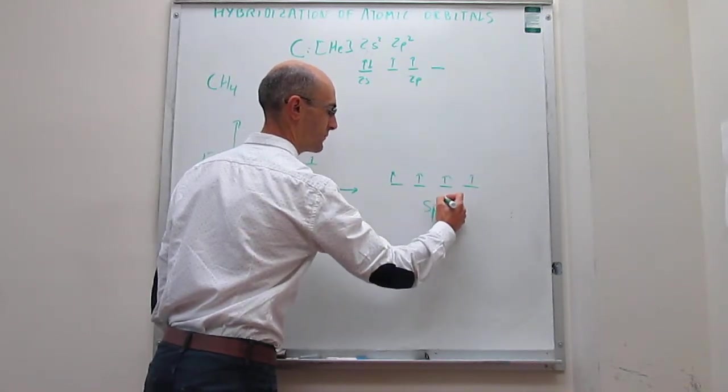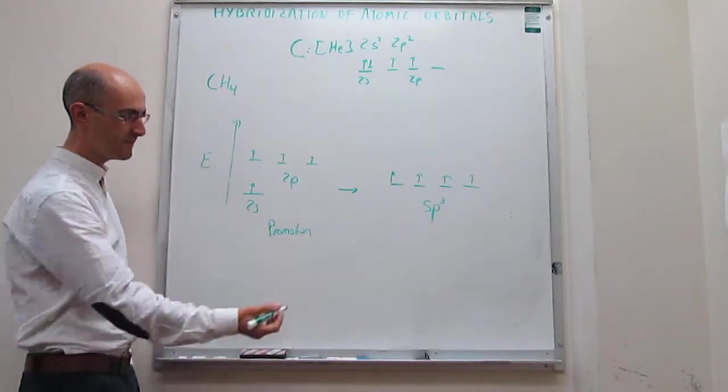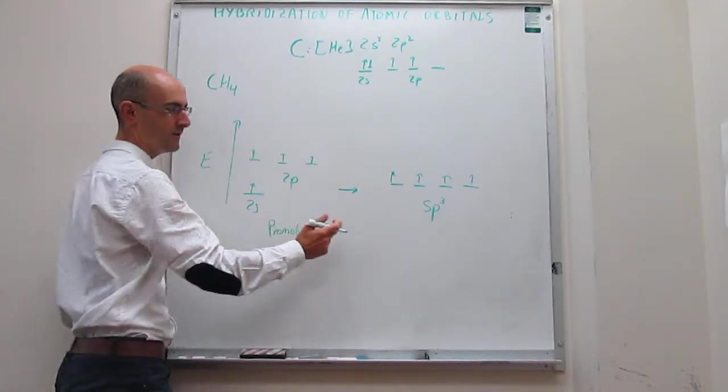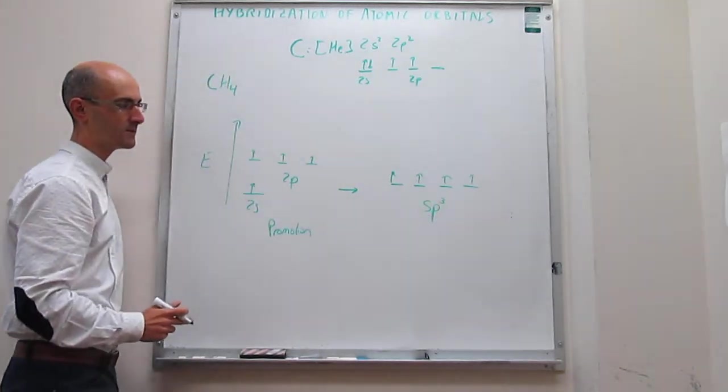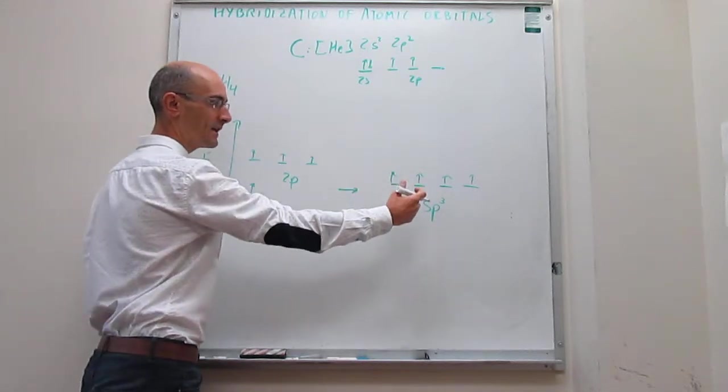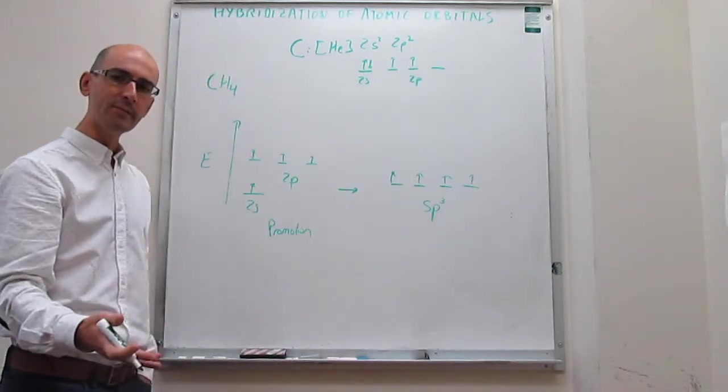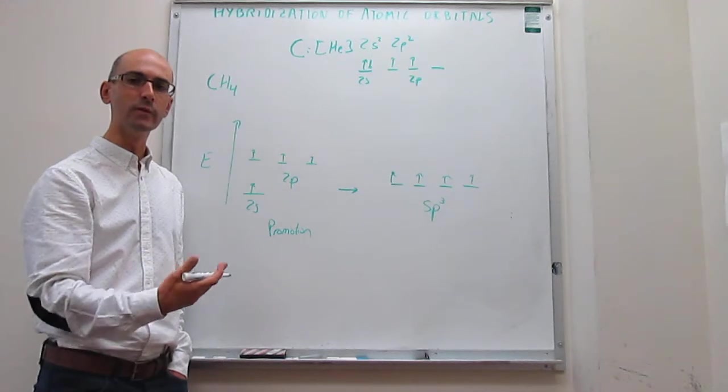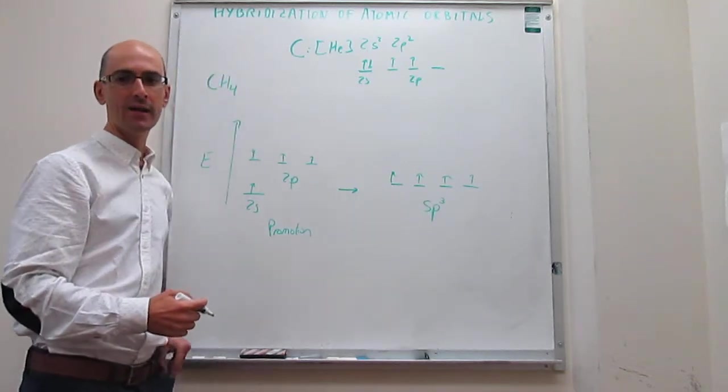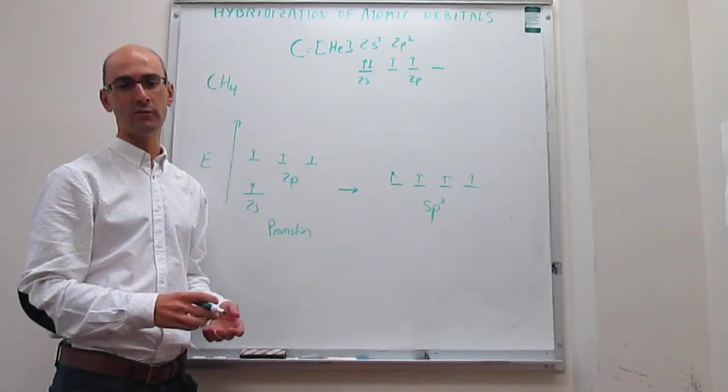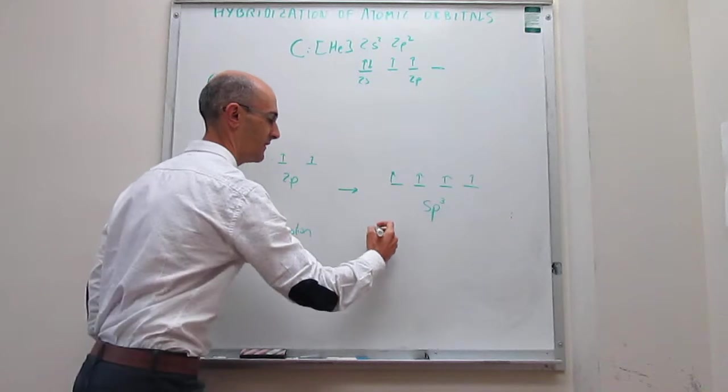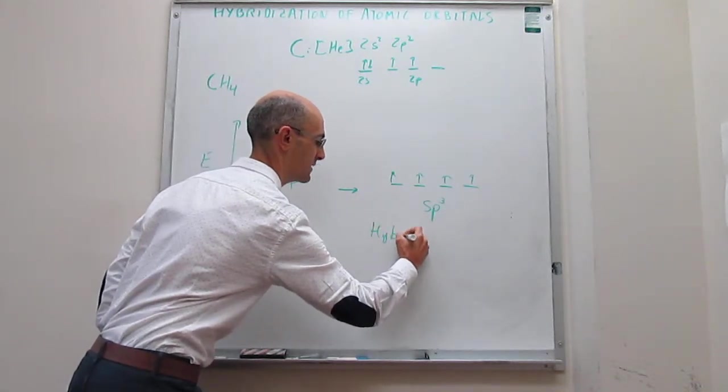We call these the sp³ orbitals. These sp³ orbitals are linear combinations which have a 25% contribution from the s orbital and 75% contribution from the p orbitals. But importantly, once you make these orbitals, they're all exactly identical. From the mathematics, which we're not dealing with in this video, you can actually see that these sp³ hybrid orbitals are aligned along the tetrahedral directions. So the orbital picture is not what we had before, but if you have this promotion and then a hybridization, that is the hybridization step, then the orbital picture for carbon would be something like this.